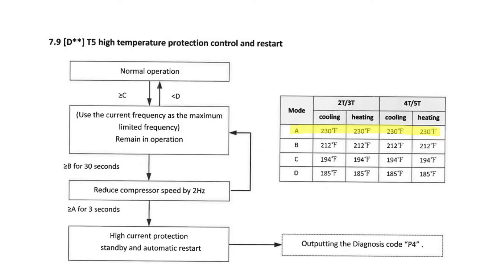And we're also going to monitor the output of the compressor on the temperature side. And as you note here, any time we're going to hit 3 seconds at 230, we're going to shut the system down or display code P4. But any time we're in the range above B, which is 212, we're going to reduce the compressor by 2 Hz.